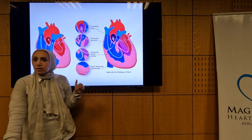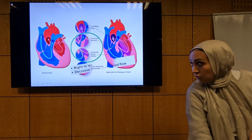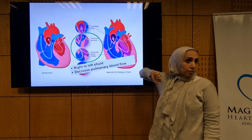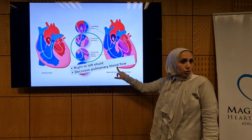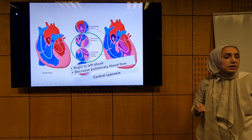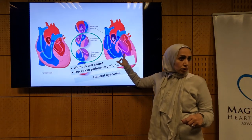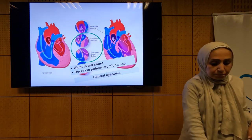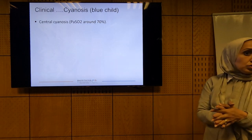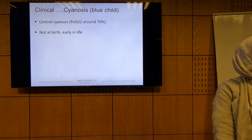This patient has an RVOT obstruction and a VSD. We have a right-to-left shunt across this VSD because there is pulmonary stenosis and decreased pulmonary blood flow, so this patient will have cyanosis.